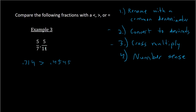If you do the cross-multiplying approach, you do 5 times 11 to get 55, and then multiply across: 5 times 7 to get 35. Then you compare those numbers. 55 is greater than 35, so therefore 5/7 is greater than 5/11. That is method 3.